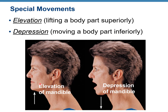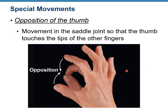Elevation and depression are also demonstrated with the mandible — elevated mandible and depressed mandible. You can also elevate or depress your scapula. Opposition is a movement only of the thumb, occurring at the saddle joint, so that the thumb touches the tips of each finger. Touching each finger with the thumb is opposition.